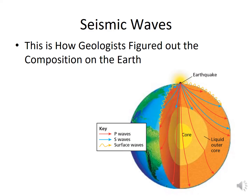How do we even know these layers exist? It's the seismic waves. Geologists figured out the composition of the earth using seismic waves from earthquakes. We have P waves, S waves, and surface waves. We will talk about these more when we discuss earthquakes.